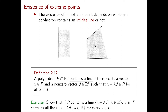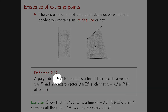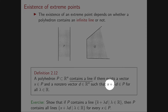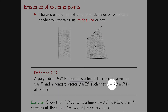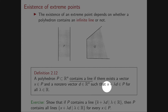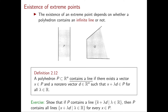Formally, a polyhedron P in Rn contains a line if there exists a vector x in P and a non-zero direction vector d such that x + λd is in P for all λ in R. You can think of x + λd as a point in the line plus the direction of the line, and since we can pick any λ in R we can go from x in direction d arbitrarily far in both positive and negative directions — and that's how you obtain your line.